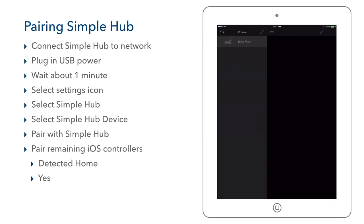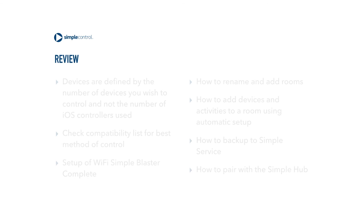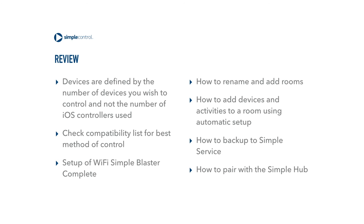We have successfully finished our one room programming. In this tutorial we defined what devices are, learned about the three methods of control, and checked the compatibility list for each device for the best method of control. We covered how to set up a Simple Blaster Complete Wi-Fi, how to rename a room, and how to add devices and activities to that room. We then went through the backup to Simple Service and pairing with the Simple Hub. For more information, please take a look at our user guide as well as our knowledge base for any troubleshooting tips. We hope you enjoy your Simple System.